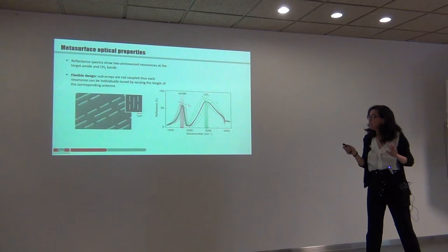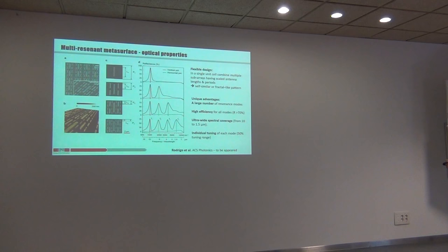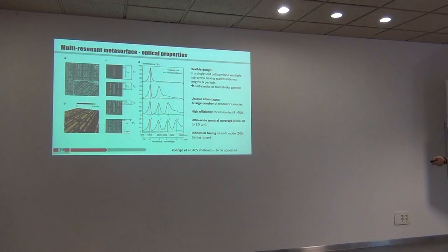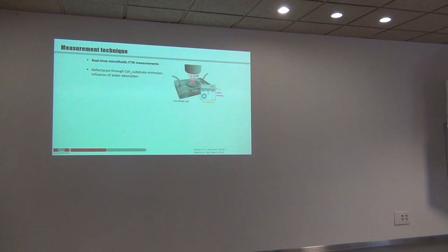The nice thing about this relatively simple design is that it is flexible in terms of tuning each resonant frequency independently from each other. So I can optimize one resonance to match as best as possible with my protein band, and then optimize the other to match with my lipid band. And you can do more than two — you can have three or four cascaded resonances, all excited at very high efficiency, which is what we care about when doing spectroscopy. You can achieve very wide spectral coverage from 1.5 micron all the way to 10 micron with individual tuning capability.